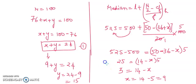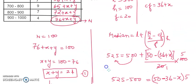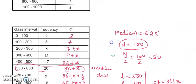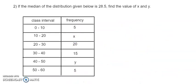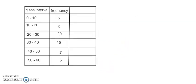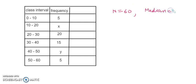We got both equation values: x equals 9 and y equals 15. Let us take one more quick example to understand this. In this question, the median is 28.5, and the total frequency n is given as 60.